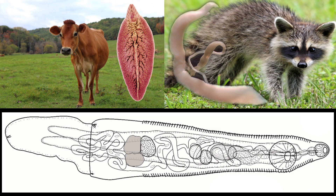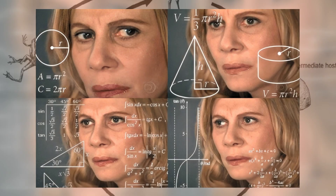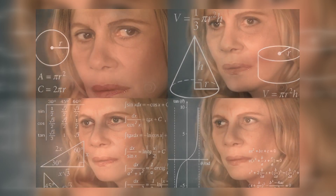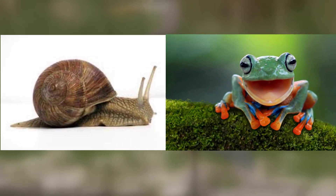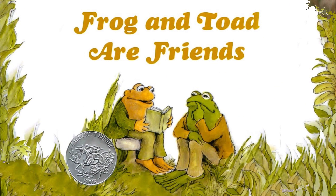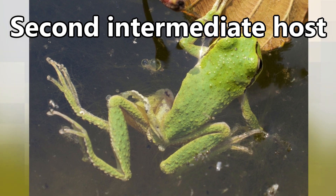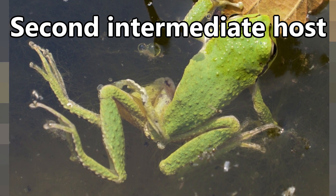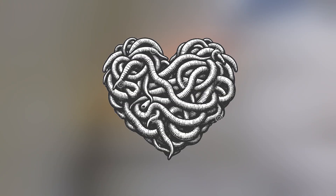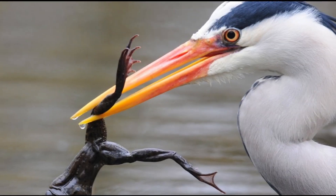One thing maintained between all trematodes is the presence of a complex life cycle. To reproduce, these parasites need to infect at least two different hosts, often times requiring three different hosts, and the final host is what we would call a definitive host. Going back to our frog friends, these little guys are what we would call a second intermediate host in the life cycle after a snail. Unfortunately for the frogs, the parasite doesn't sexually reproduce here, but instead mates inside the gut of a bird or mammal, meaning the parasite wants this frog to be eaten at some point.